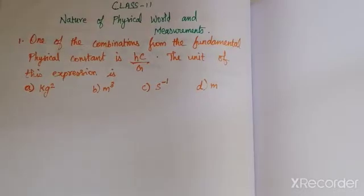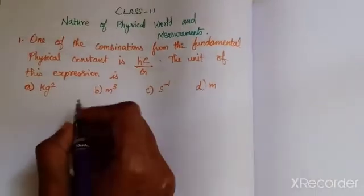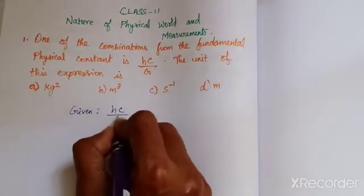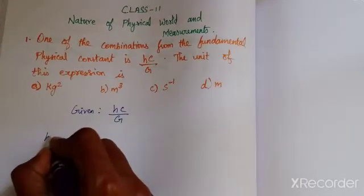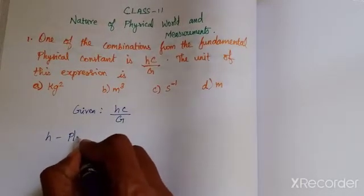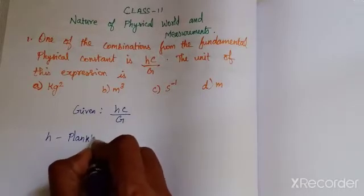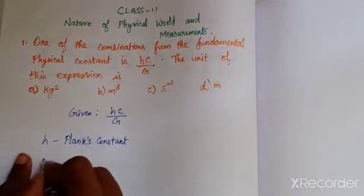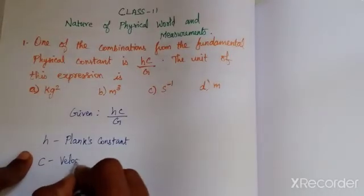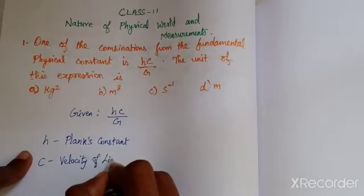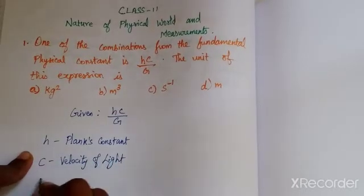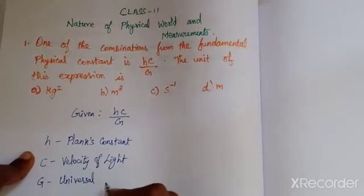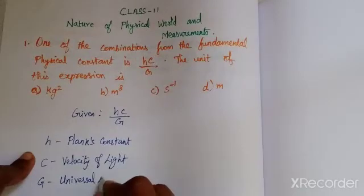First, let's look at the given expression hc/g. Here h is Planck's constant, c is the velocity of light, and g is the Universal Law of Gravitation constant.